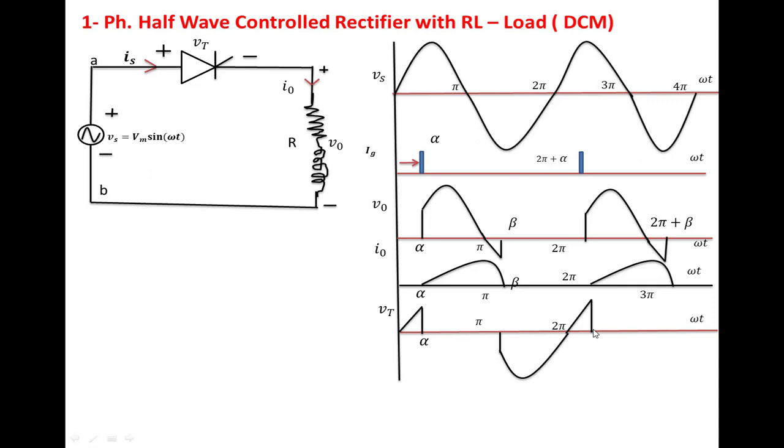Up to 2π + α, at this point the SCR is on. We are finding the average output voltage, so the base period is 2π. The formula is: (1/2π) ∫[α to β] Vm sin(ωt) d(ωt).